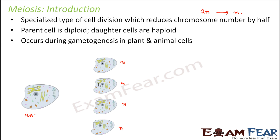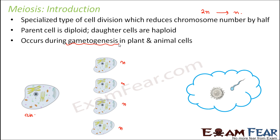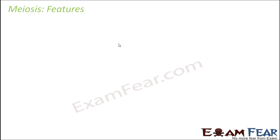Meiosis occurs during gametogenesis in plant and animal cells. Gametogenesis is the process of formation of gametes — gametes are nothing but the sex cells. When we talk about sex cells in human beings, we are talking about the sperm, which is the male sex cell, and the ovum, which is the female sex cell. Let us look at some of the important features of meiosis.